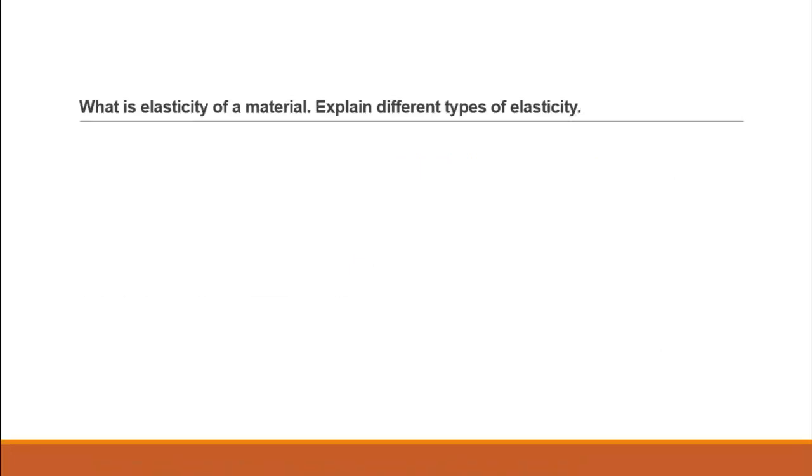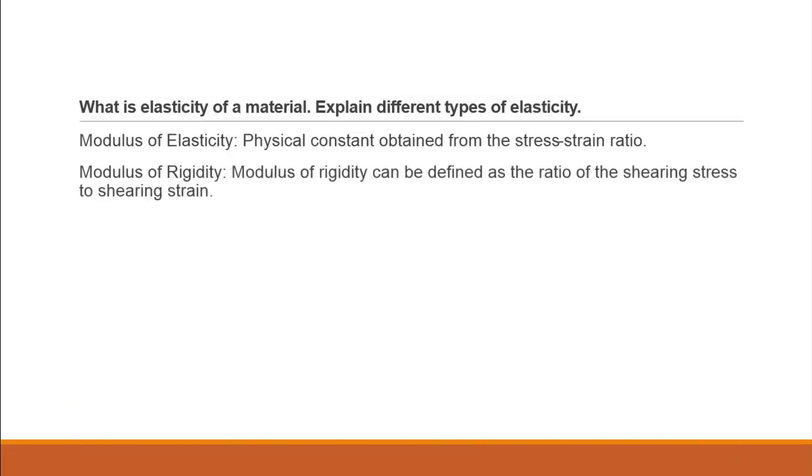What is elasticity of material? Explain different types of elasticity. Modulus of elasticity is the physical constant obtained from the stress-strain ratio, which is the portion that maintains Hooke's law. The modulus of rigidity can be defined as the ratio of the shearing stress to shearing strain.